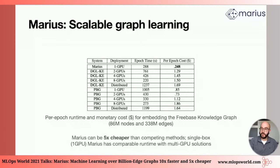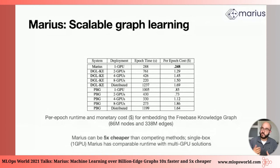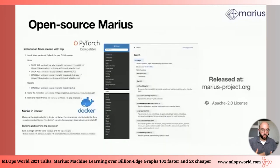The good news is that Marius is open source. We have released this project at mariusproject.org and it's under the Apache 2 license. It is already PyTorch compatible and we also offer Docker containers for easier deployment. We have close to 30 datasets available out of the box and close to 10 models, and we're still working on developing and deploying new models over Marius.